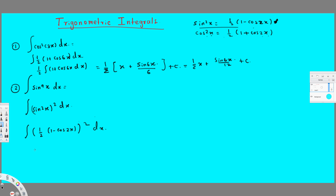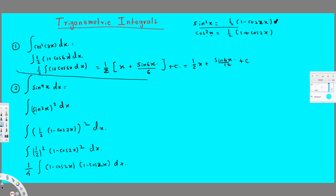Let's square both of them, so we have (1/2)² times (1 - cos2x)² dx. Half squared is 1/4, so I can write 1/4 in front of the integral of (1 - cos2x)(1 - cos2x) dx. Let's multiply that out.